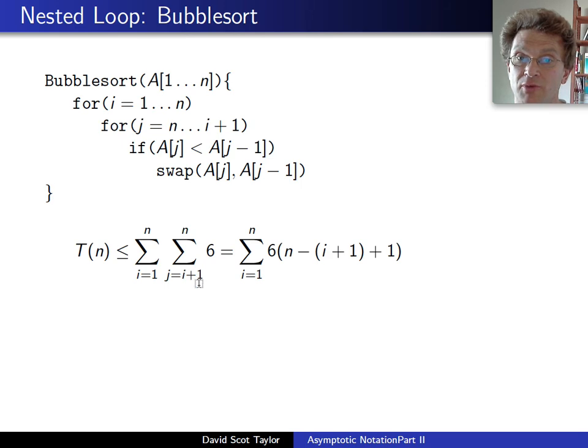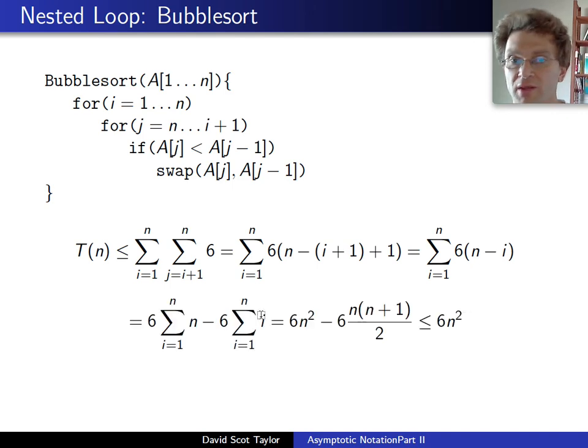We're going to get rid of that inner summation. This has something like n minus i plus 1 terms. I'm going to get rid of that inner summation. Some algebra. I'm going to simplify that. Do some more algebra. And in the end, this term here equals this thing over here. And clearly, this last thing here is no larger than six n squared operations.